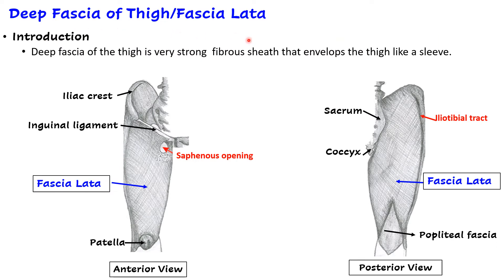What is deep fascia of thigh or fascia lata? Like any other deep fascia of the body, the fascia lata lies deep to the superficial fascia and superficial to the muscles of the thigh. Here in the thigh the deep fascia is very strong and forms a fibrous sheath which envelops the thigh like a sleeve or stocking. We can see here the anterior and posterior views, with the upper boundaries showing the inguinal ligament, iliac crest, patella, femoral condyles, sacrum, and coccyx.